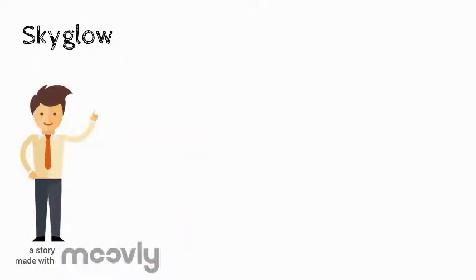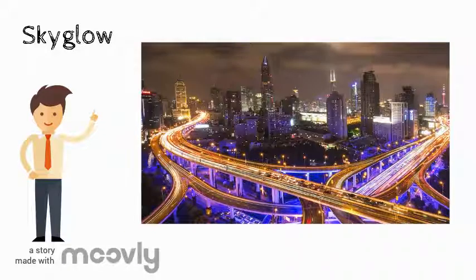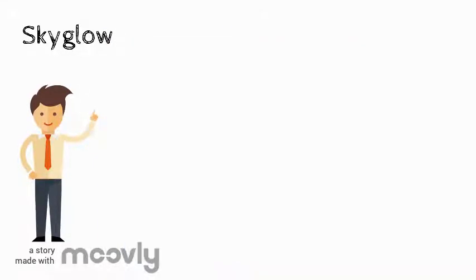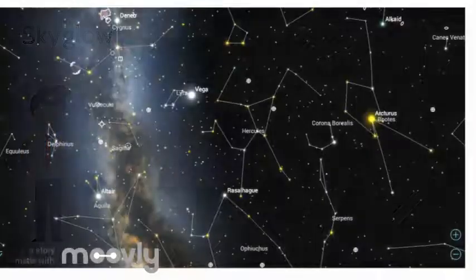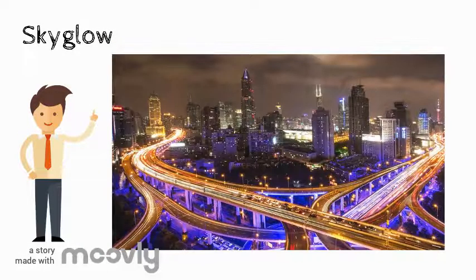Sky glow is when a large amount of artificial light points upward into the night sky over inhabited areas. The light interferes with our nighttime vision. Therefore, we cannot see stars and constellations under areas where sky glow is present. The areas where sky glow is most common include cities and tourist attractions.